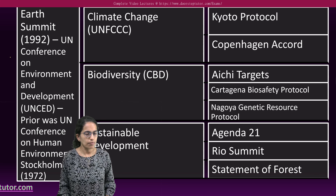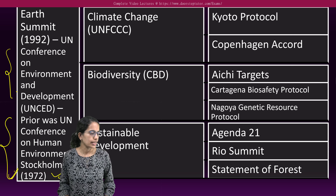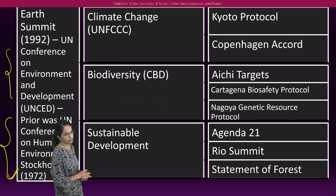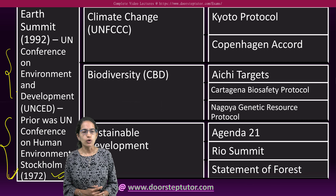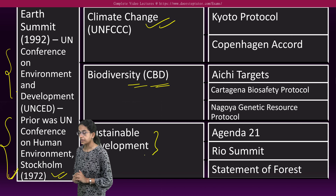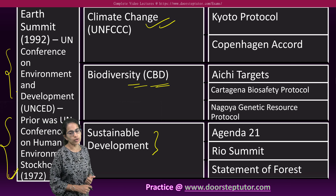The Earth Summit took place in 1992 and was part of the UN Conference on Environment and Development. Prior to this was the Stockholm Conference in 1972, which was the UN Conference on Human Environment. The Earth Summit had three components: climate change under UNFCCC (United Nations Framework Convention on Climate Change), biodiversity under CBD, and sustainable development.